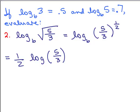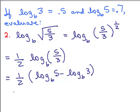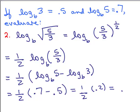So it's at this point I could write that as the difference of the log of the numerator minus the log of the denominator. So I could leave the 1 half out in front, and in parentheses write log base B of 5 minus log base B of 3. The log of 5 was 0.7, and the log of 3 was 0.5. So I have 1 half times, what's 0.7 minus 0.5? That's 0.2, and what's 0.2 divided by 2, or 1 half of 0.2? That's 0.1, or 1 tenth.